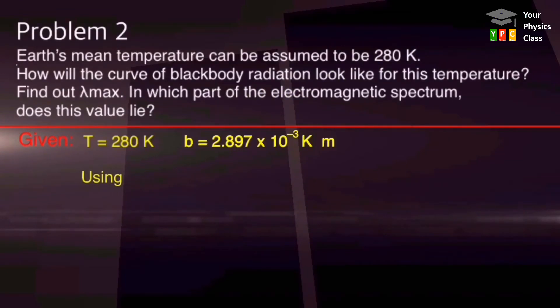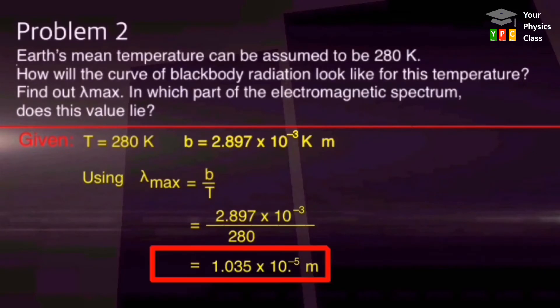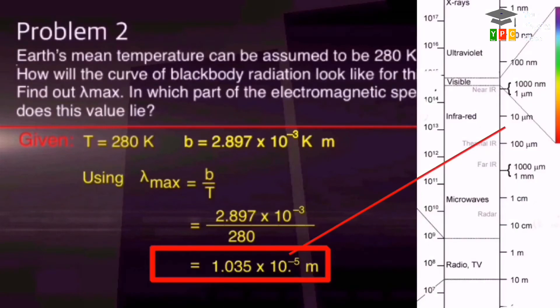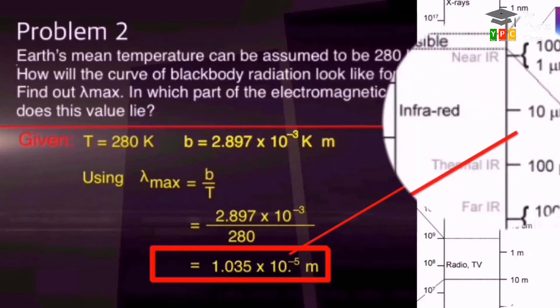Now, using Wien's displacement law, lambda max equals b by T, substituting values and solving, we get 1.035 times 10 raised to minus 5 meter. If you observe the electromagnetic spectrum, you will get that our number is in the range of 10 micron and it falls in the far infrared region.